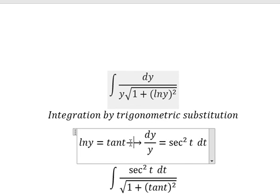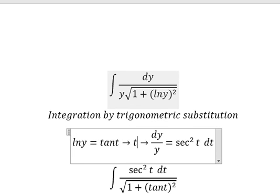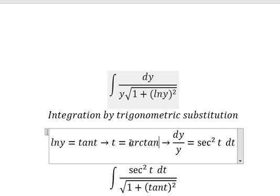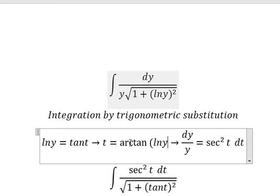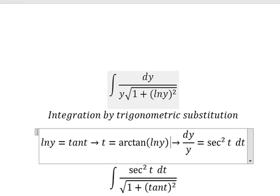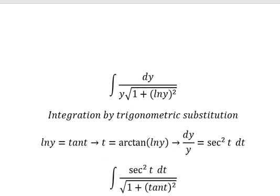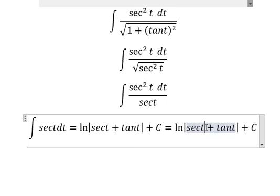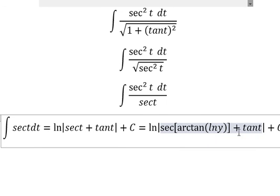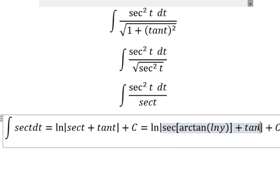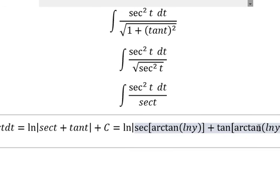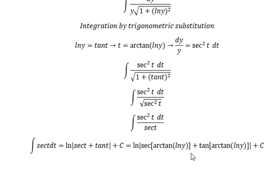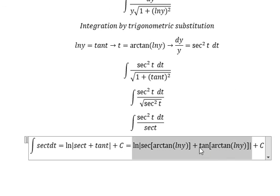So we can get t equals to ln y. We then put this back to replace t in the expression, so that everything is written in terms of ln y.